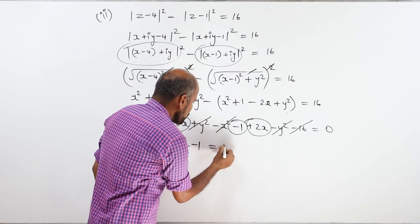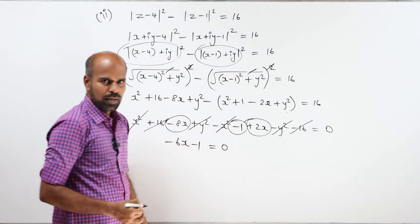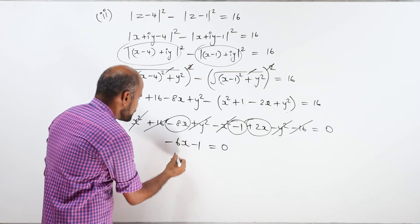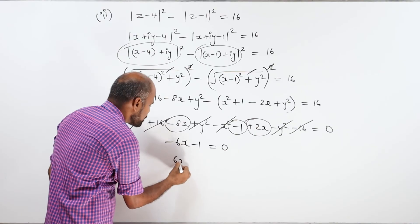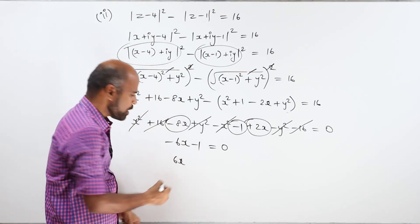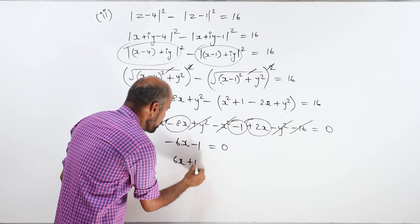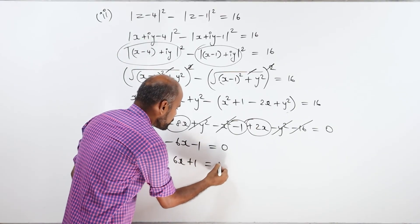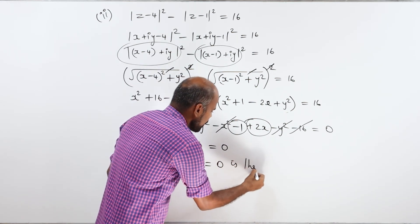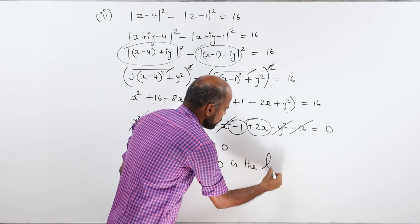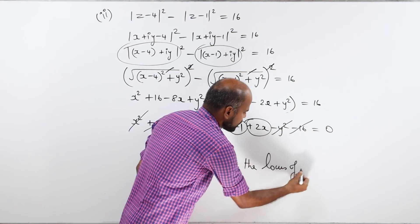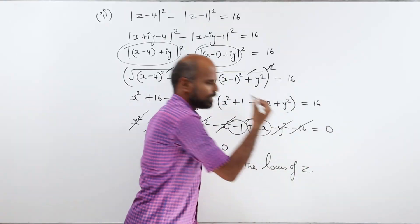Bringing everything to zero, with opposite signs: minus 6x becomes plus 6x, minus 1 becomes plus 1, equal to 0. This is the required locus of z.